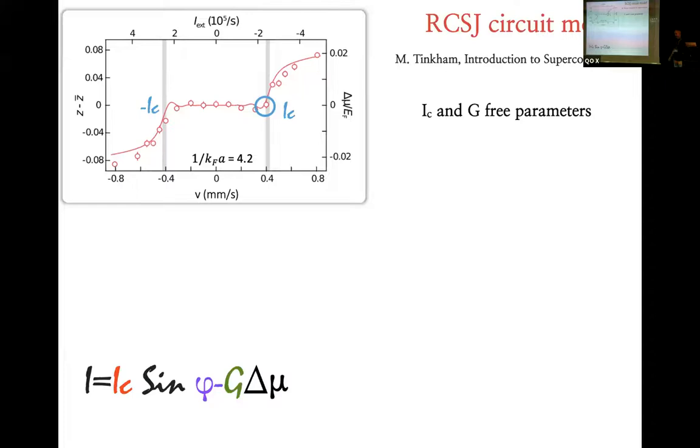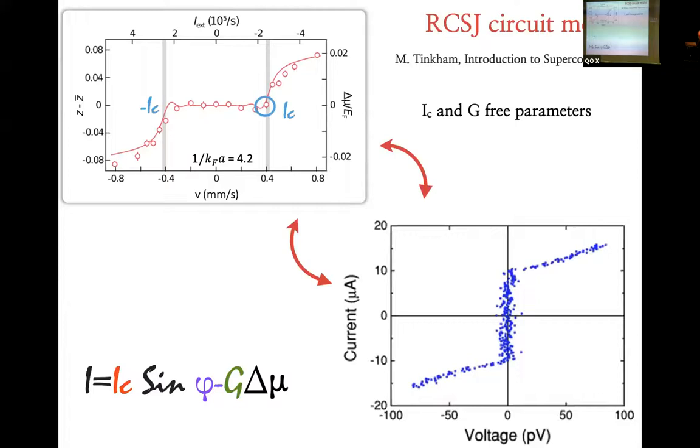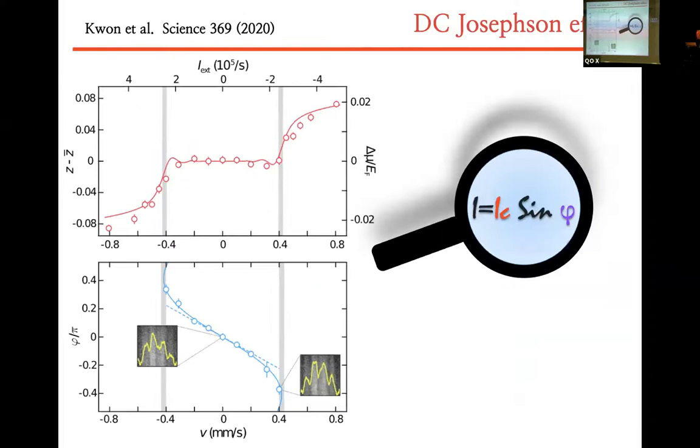I plot the difference in chemical potential that we can measure after the barrier movement versus the velocity or the current. What we see is that below critical velocity, we don't see any accumulation of chemical potential. So the atoms can pass through the barrier without any problem. While if I increase the velocity, then I start to see chemical potential increasing in the barrier. We use a standard model that you use in superconducting junctions to extract the critical current and the conductance. It's more or less the same effect that is observed in superconducting junctions. We see a plateau. It's current without chemical potential difference. So it is one to one matched to the superconducting system.